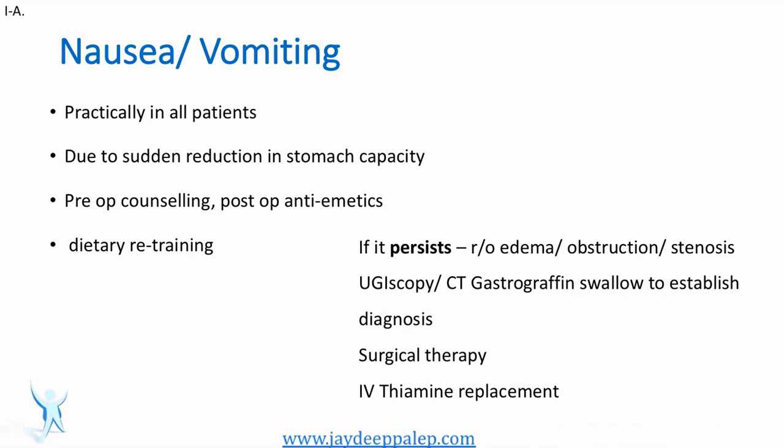When you perform your own upper GI endoscopy, you will see all kinds of things — narrowing of the lumen, or perhaps a stitch gone wrong closing the lumen. These are things you will notice only if you do your own upper GI endoscopy. A CT gastrographin swallow is always handy and helps establish diagnosis in the early post-op period if there is persistent vomiting, especially after a sleeve or gastric bypass. Surgical treatment may sometimes be required. Thiamine deficiency can also cause severe vomiting and can be treated medically.